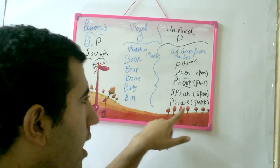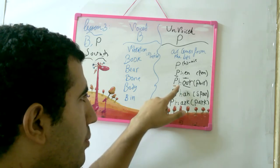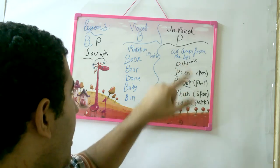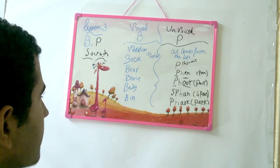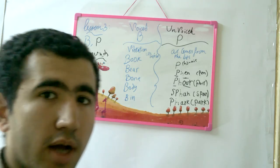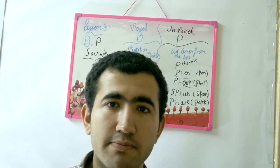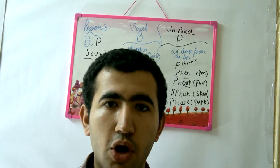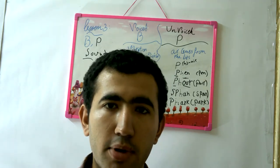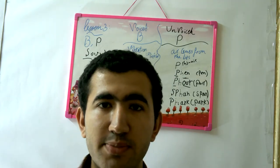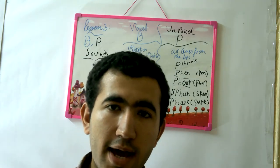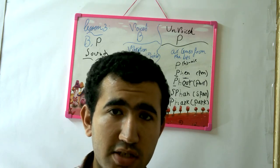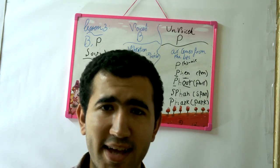Park, span, poor, pan, and pen. Thank you for watching this video. For more videos, go to www.facebook.com/learn.special.english/videos. See you!